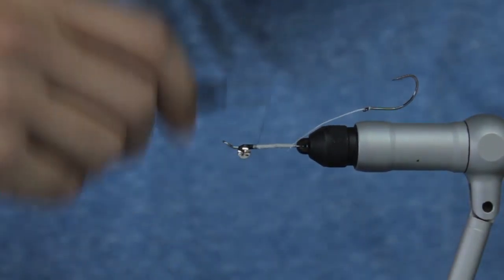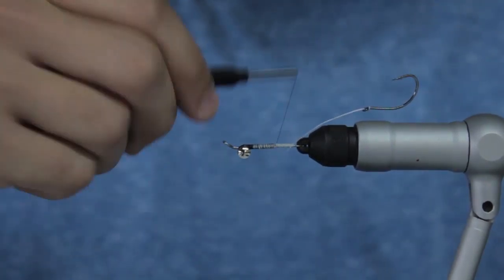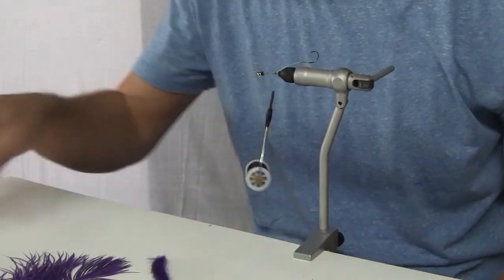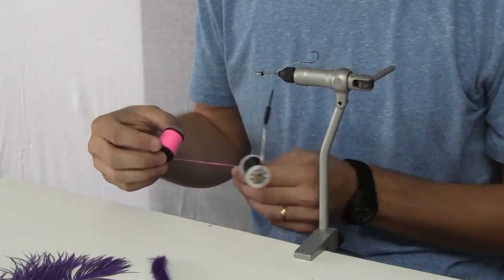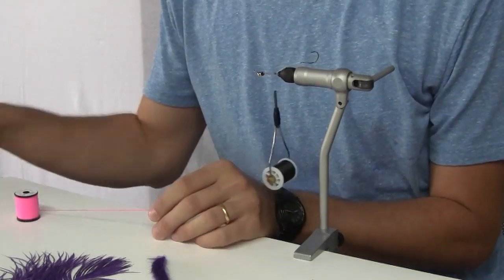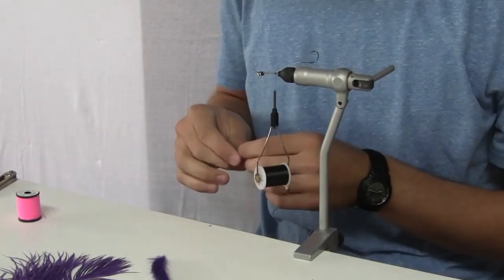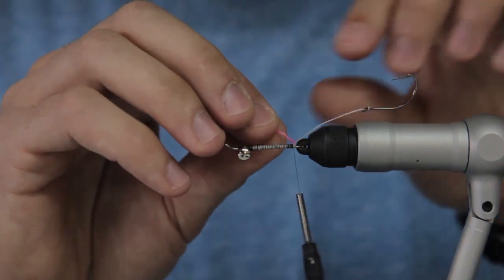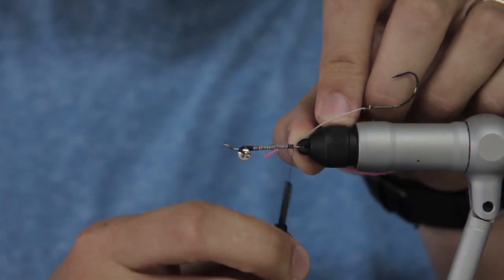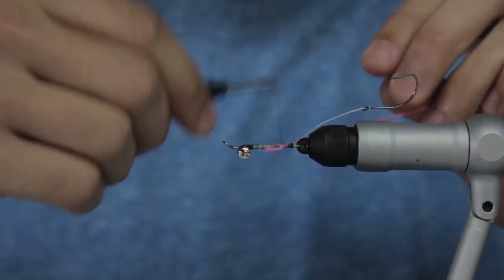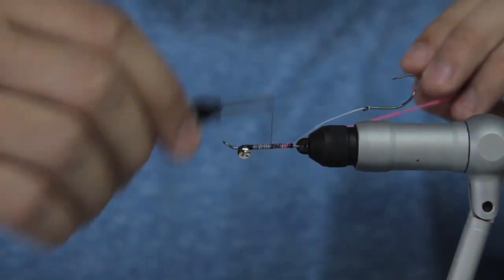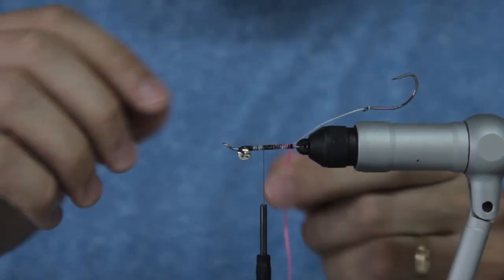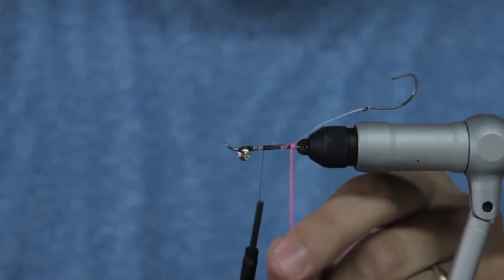Those are pretty good. I'll bring the thread back to where the stinger line starts, and then we're gonna add a little bit of light pink uni yarn. This is just gonna act as your hot spot on the back of the fly. We're gonna bring it up to just about halfway up the shank, and I'm going to wrap it forward.